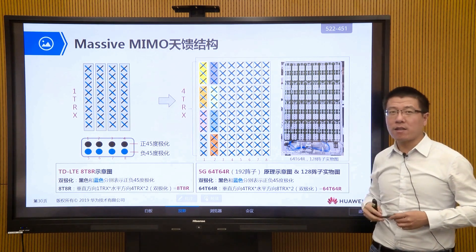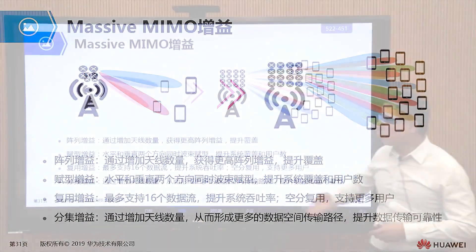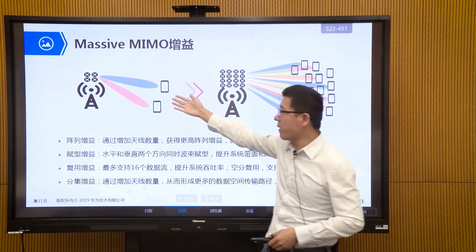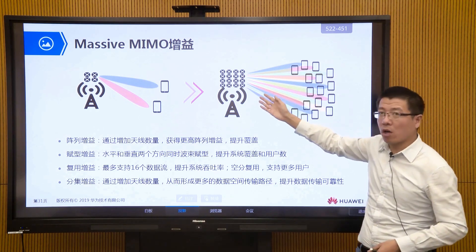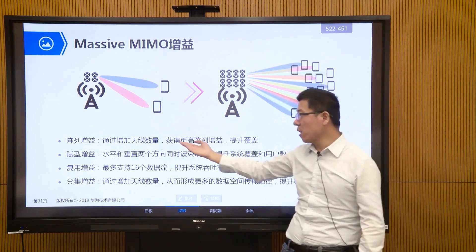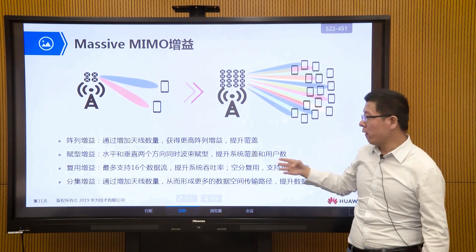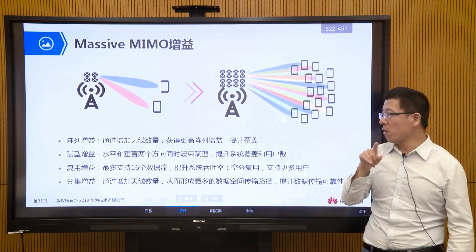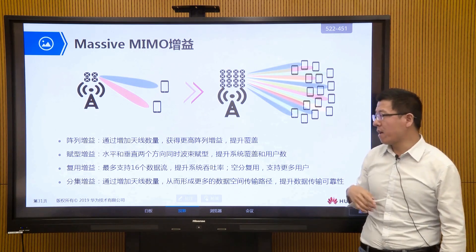What gains does massive MIMO bring compared to the traditional 4T4R or 8T8R? The traditional method can also perform beamforming — especially in TDD LTE systems using 8T8R — but the beams it can form are very limited. With 5G massive MIMO, we have 64 vector signals. By superimposing so many vector signals, we can achieve more directional beams, bringing array gain, shaping gain, usage gain, and diversity gain. Through this multiplexing gain, we can significantly increase data rate. Currently the highest supports 16 independent data streams — achieving a 16x data rate increase under the same spectrum resources. In the future, it may increase to 22 or even 32 times.